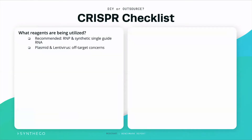you have to be very cognizant of what reagents are being used. We recommend ribonuclear proteins and synthetic single-guide RNA as part of the ribonuclear protein complex, and we highly do not recommend plasmid or lentivirus, because there are off-target concerns with those two and the efficiencies are generally not higher.